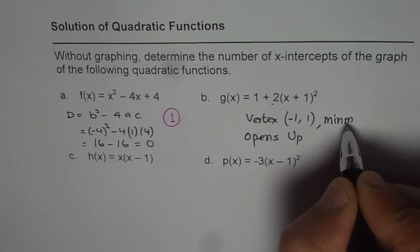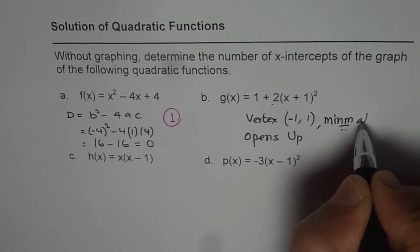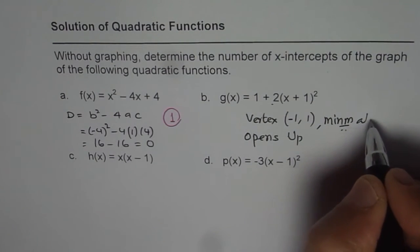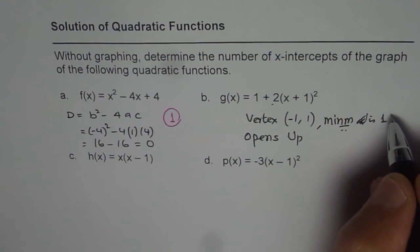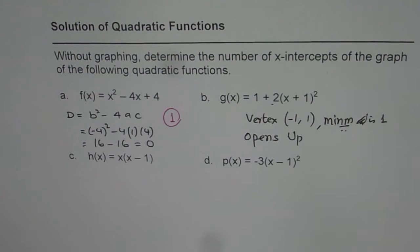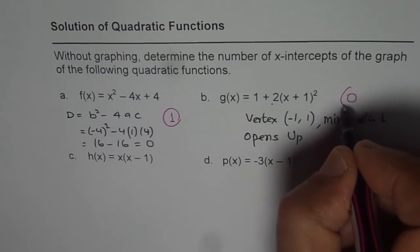that means this is minimum. At minimum, the minimum value is 1. And from there it goes up, that means how many x-intercepts? None. So 0 in this case. You can always sketch and figure out.